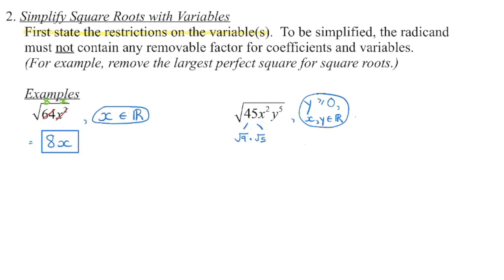Let's simplify now. We have a square root, so what is the largest perfect square we can pull out of 45? That's 9. The square root of 9 gives a value of 3, so we put that up top, and we still have the square root of 5 inside. Then we have x squared, which is a perfect square — the square root of x squared gives us x. Then we have y to the power of 5. Because it's a square root, we are pulling groups of 2. We can't pull perfect groups out of 5 y's, so we break this into y to the power of 4 times y. The square root of y to the power of 4 gives us y squared, so we put that up top.